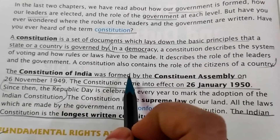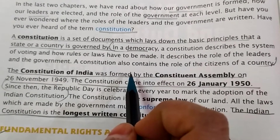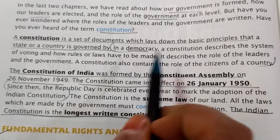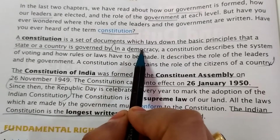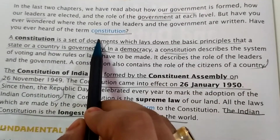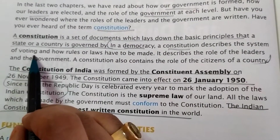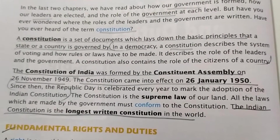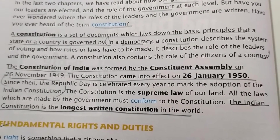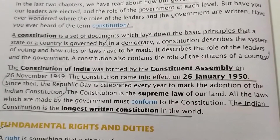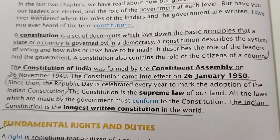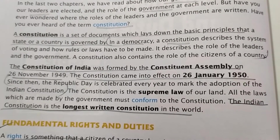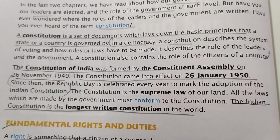In a democracy, a constitution describes the system of voting and how rules or laws have to be made. In India, which is a democratic country where every individual has the right to participate in elections from the age of 18, the constitution describes the election system, procedures, and how different rules and regulations will be made and implemented.